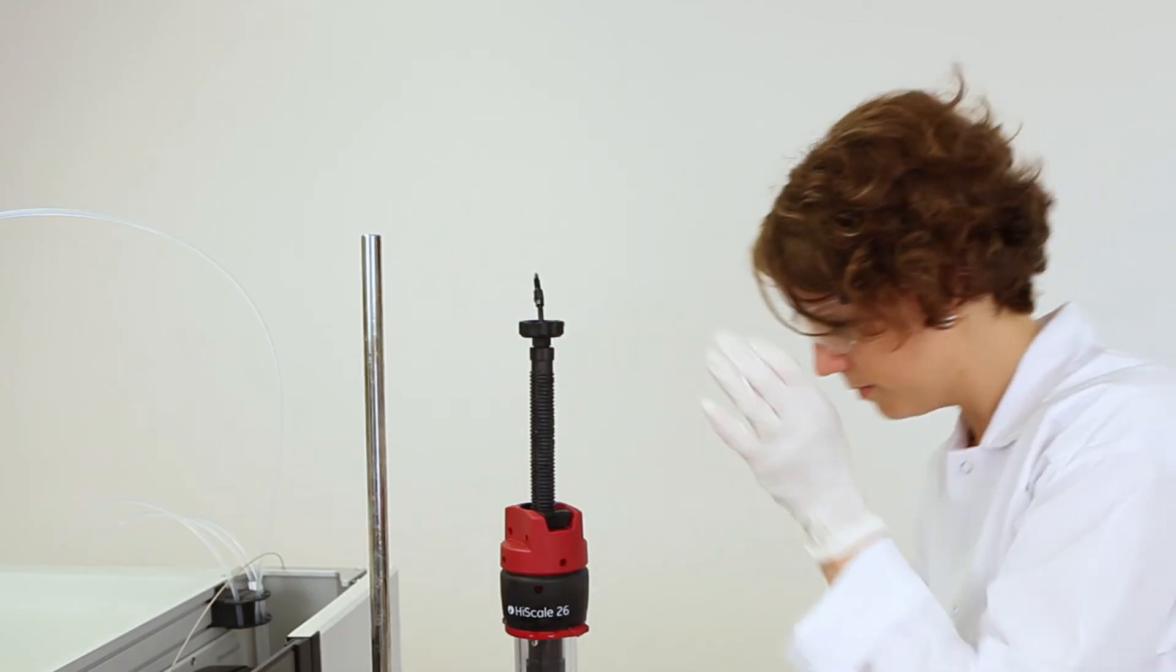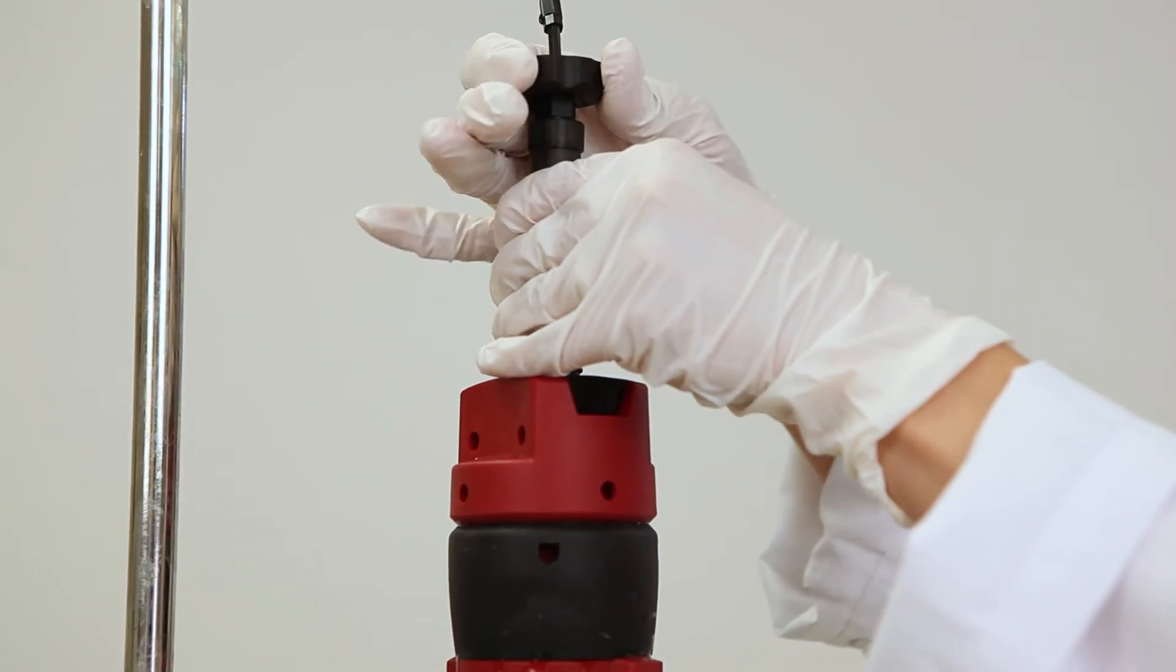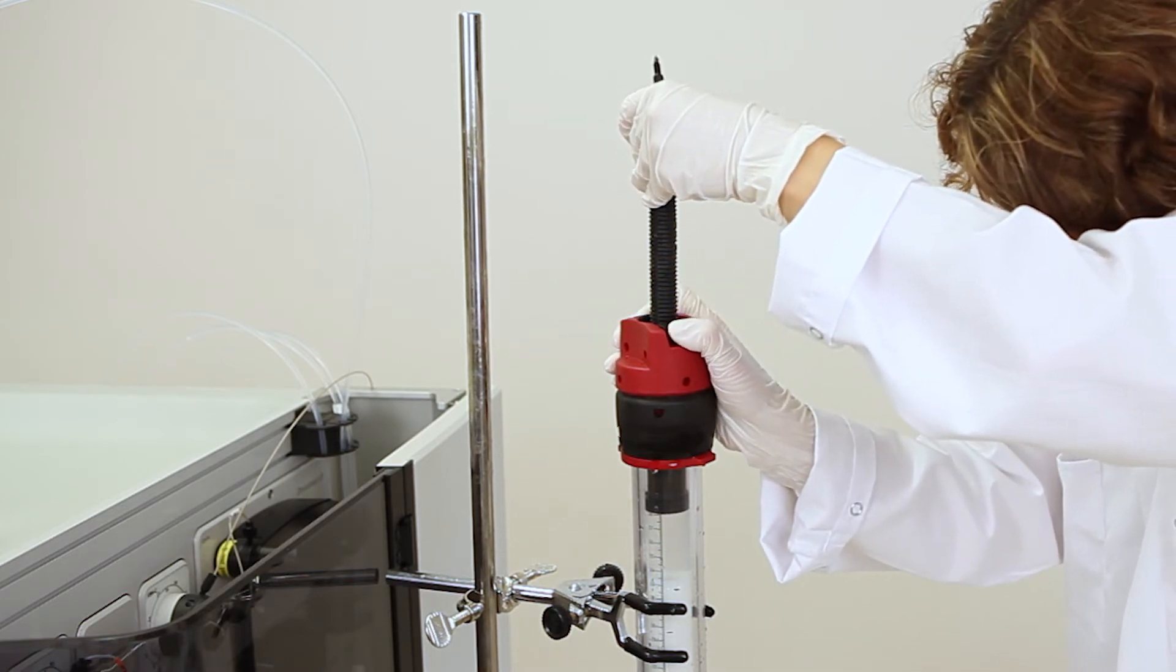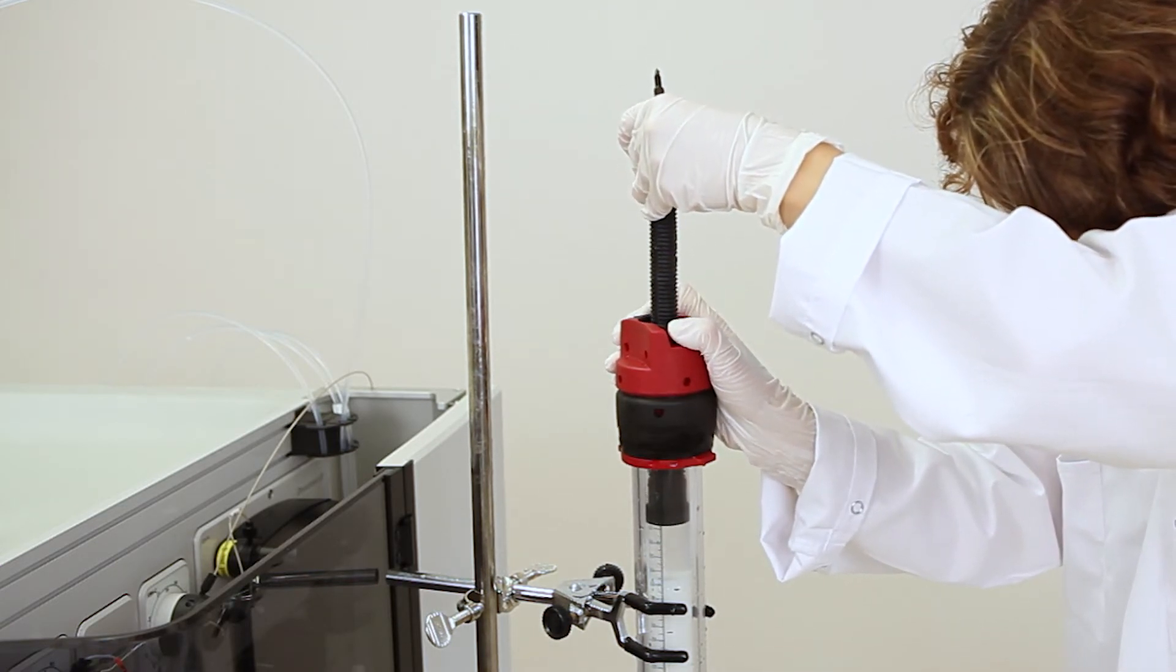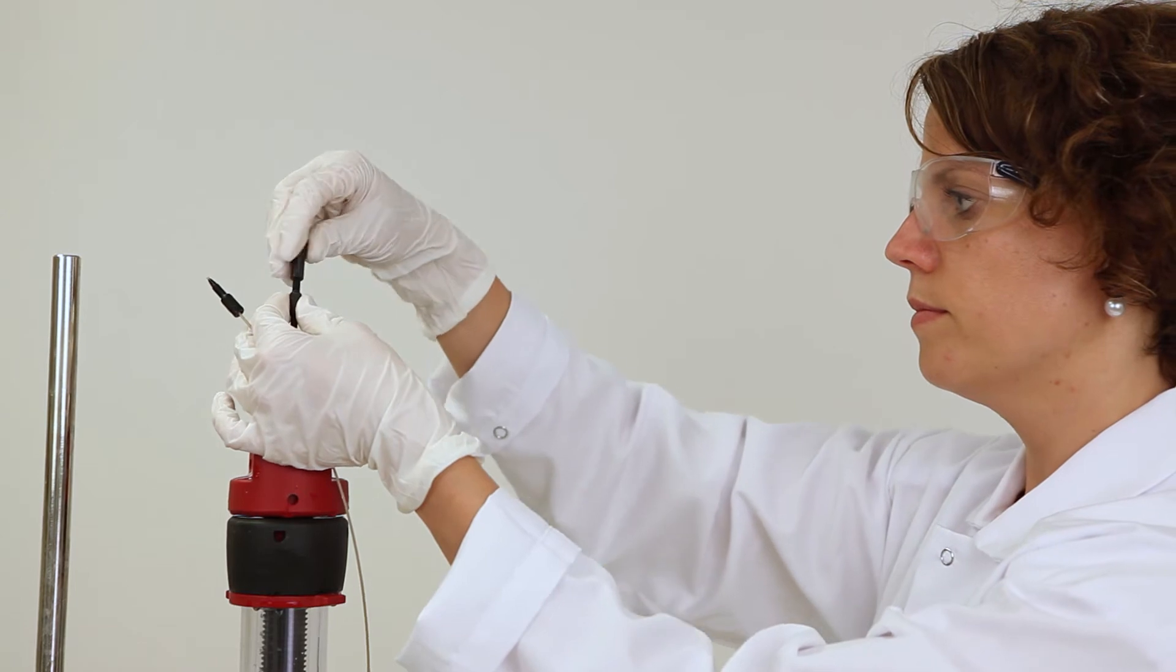Remove the syringe. Tighten the adapter O-ring. To ensure removal of trapped air, turn the adapter down, expelling liquid out through the adapter tubing.